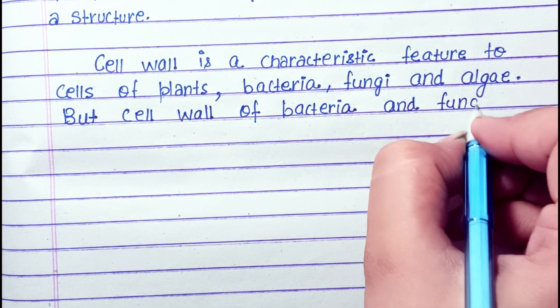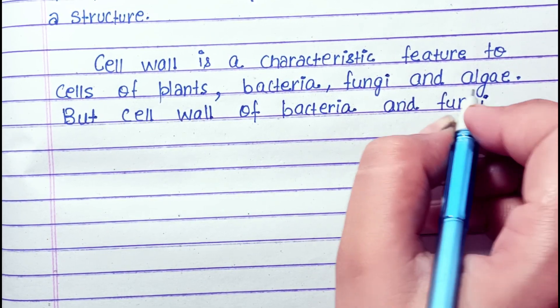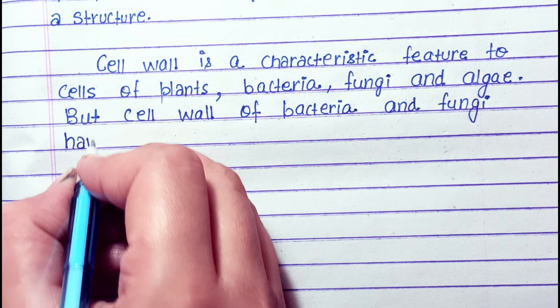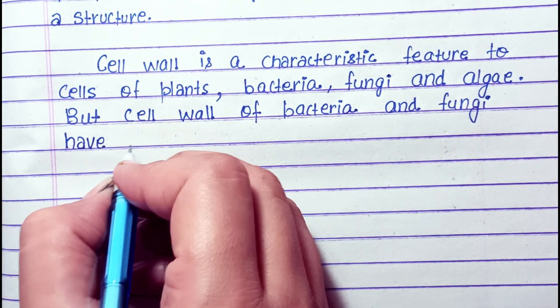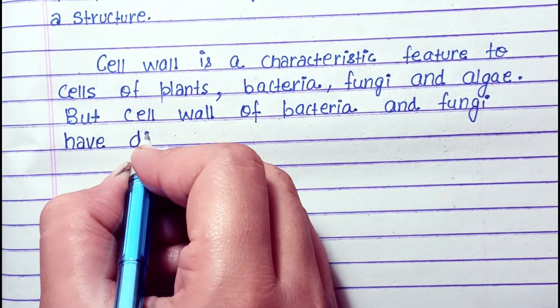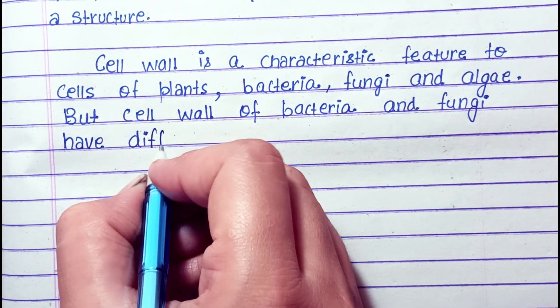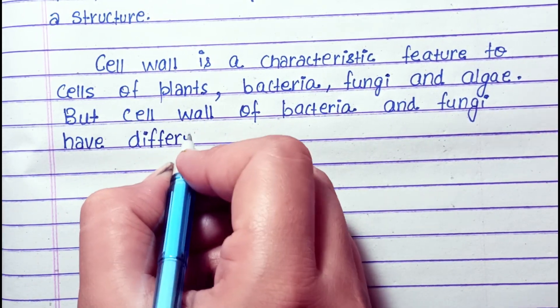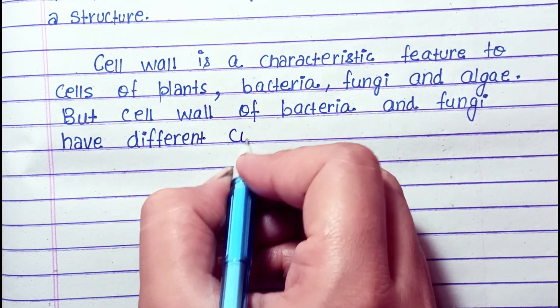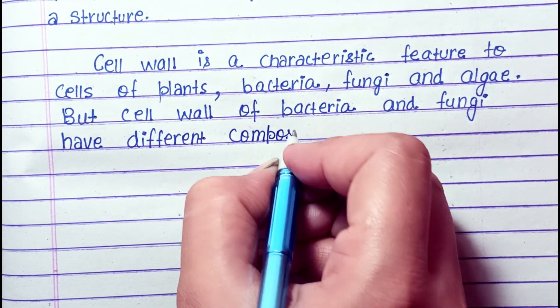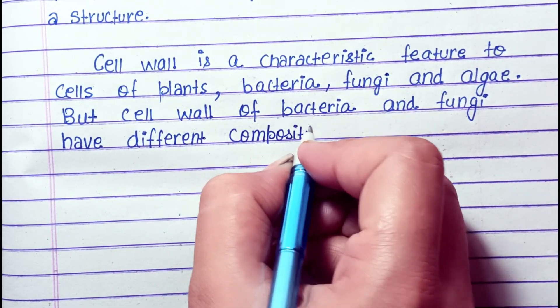Cell wall is a characteristic feature of cells of plants, bacteria, fungi and algae. However, the cell wall of bacteria and fungi have a different composition.